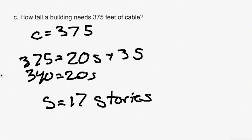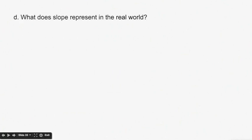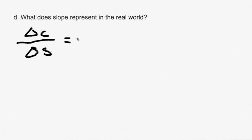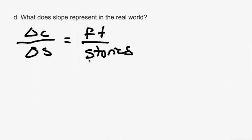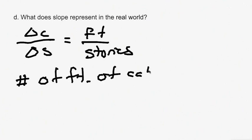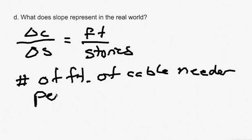Part D: what does the slope represent in the real world? The slope is delta cable over delta stories, so it's the number of feet of cable needed per story of the building — how much cable each story requires.